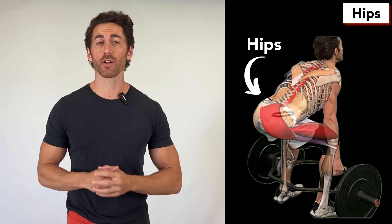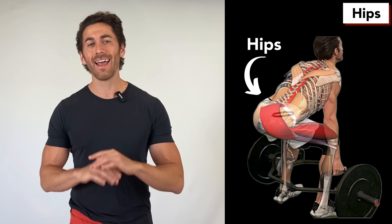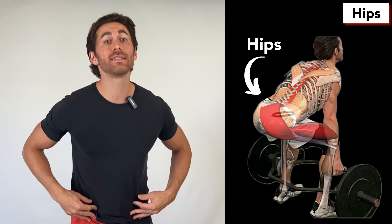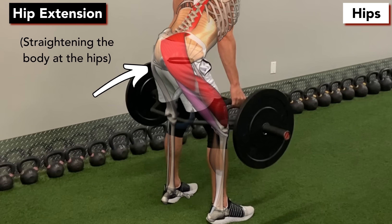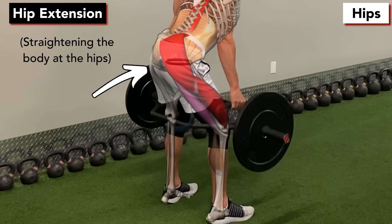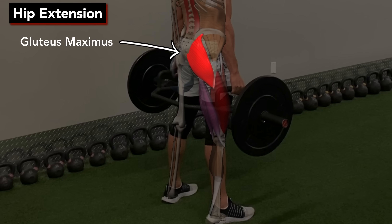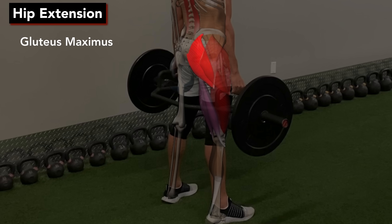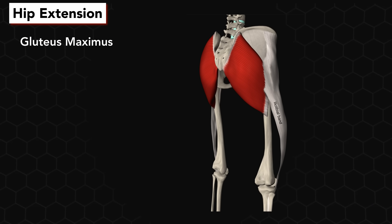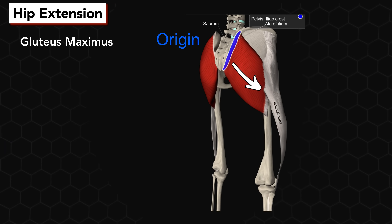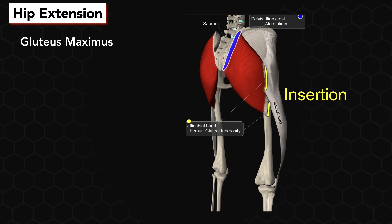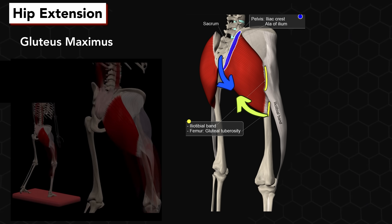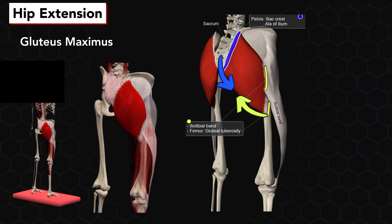Since the hips are such a pivotal part of the deadlift, we'll start by looking there. Any deadlift variation will require hip extension, or straightening the body at the hips. The most powerful hip extensor we have is the gluteus maximus, making it a primary target of any deadlift variation. The gluteus maximus originates along the back of the pelvis or hip bone and travels down and out to insert on the back of the femur or thigh bone. So when it contracts, it brings the back of your hips and the back of your upper leg closer together, which straightens the hips.